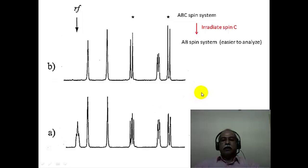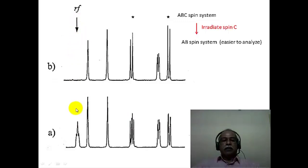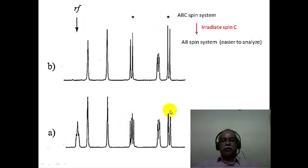Another example shows an ABC system going to an AB spin system. When a second radiofrequency is applied to one multiplet and it is decoupled, that signal completely vanishes. The two starred multiplets, which were originally a complex second order multiplet, now appear as an AB quartet that can easily be solved to extract J value information — much simpler than the original complex multiplet pattern.